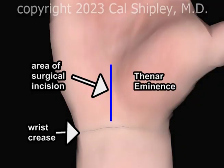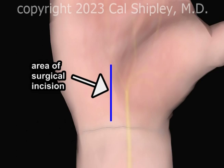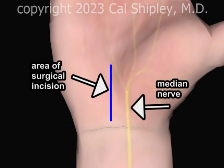The surgery begins with a skin incision of several centimeters, starting at the wrist crease and running along the medial border of the thenar eminence. Using these landmarks ensures that the incision is a safe distance from the median nerve.